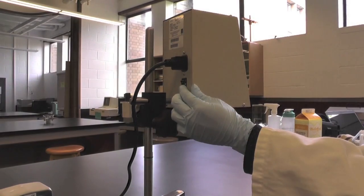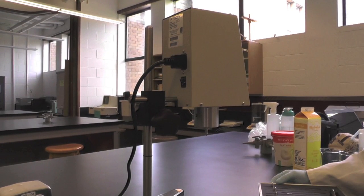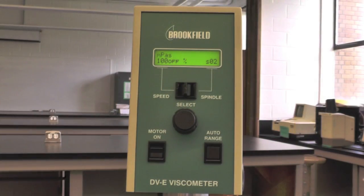To turn on the viscometer, first turn the power switch to the on position. The display of the screen will then appear.